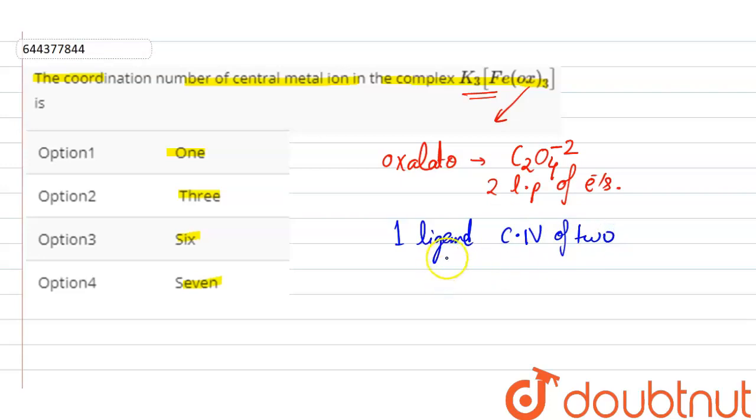So the total coordination number of the central atom will be six. Hence, the third option is correct. Thank you.